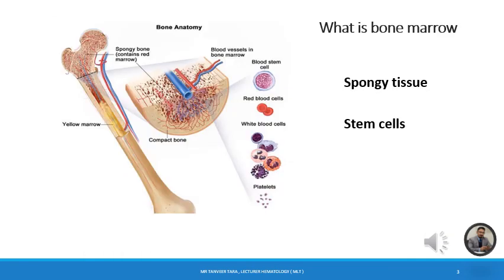Bone marrow is a spongy tissue inside some of your bones, such as your hip bone and thigh bones, and it contains stem cells. These stem cells can develop into different cells like red blood cells, white blood cells, and platelets.